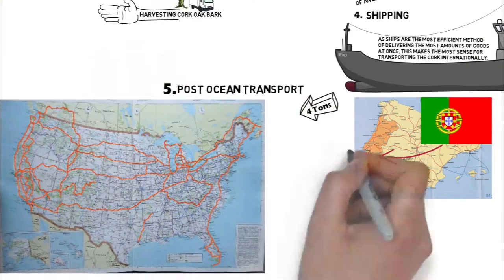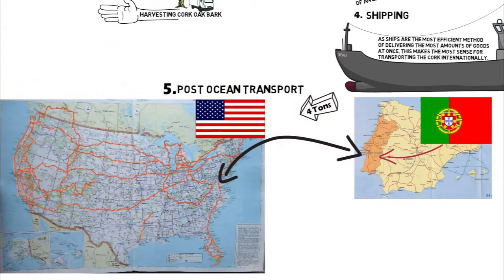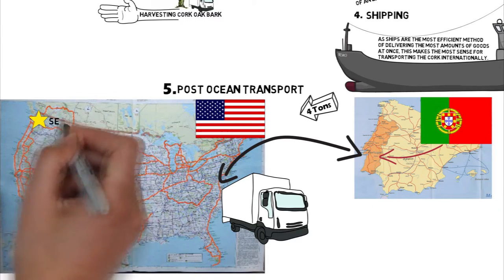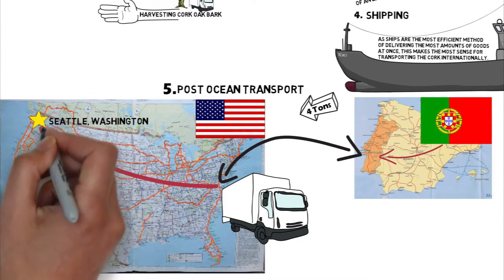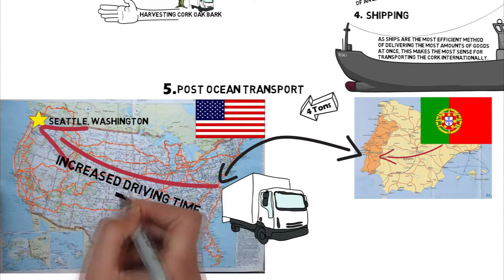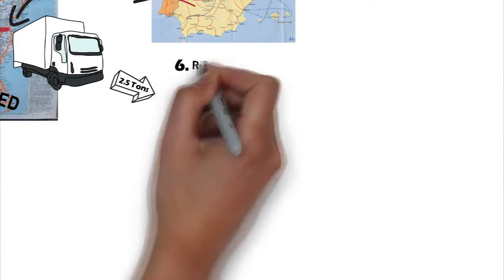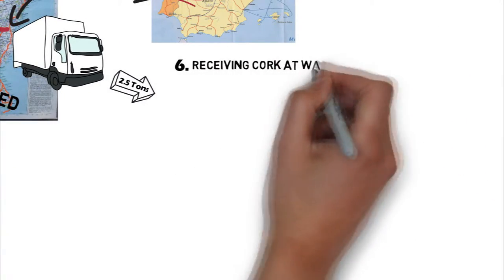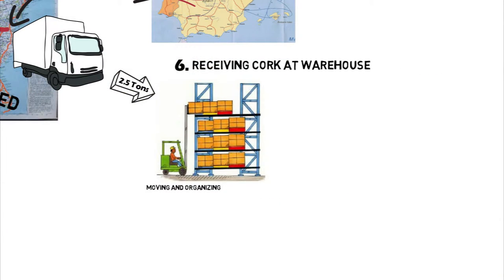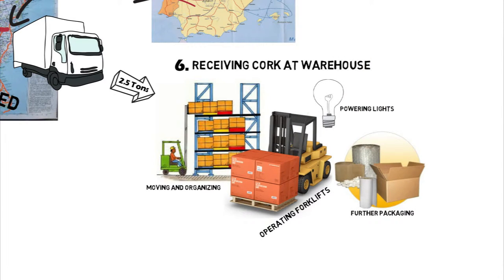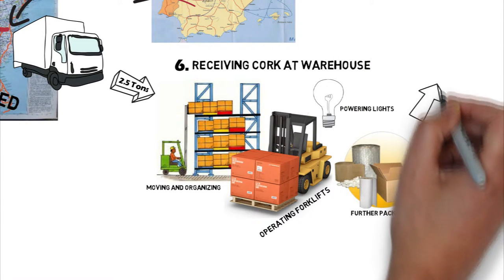Once all the cork makes its trip across the ocean — let's say it was shipped to the United States — it gets loaded onto trucks and transported to whoever ordered it. Since the United States is much larger than Portugal, the driving time will be increased, generating more carbon. We'll tally post-ocean transport as 2.5 tons of carbon. The next stop is the warehouse of whoever ordered the cork. Moving and organizing the cork, powering the lights, operating forklifts, and packaging all generate a carbon footprint — about 0.25 tons.